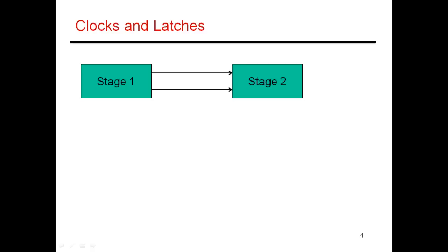In this example, I'm going to assume that an instruction goes through a two-stage pipeline in some processor. In stage one, I do certain operations like fetch, then decode the instruction — figuring out exactly what it is trying to do and what operands it needs — and then get those operands. In stage two, I actually execute. So if it's an add, this is where I do the actual math, and then write the result into some register.